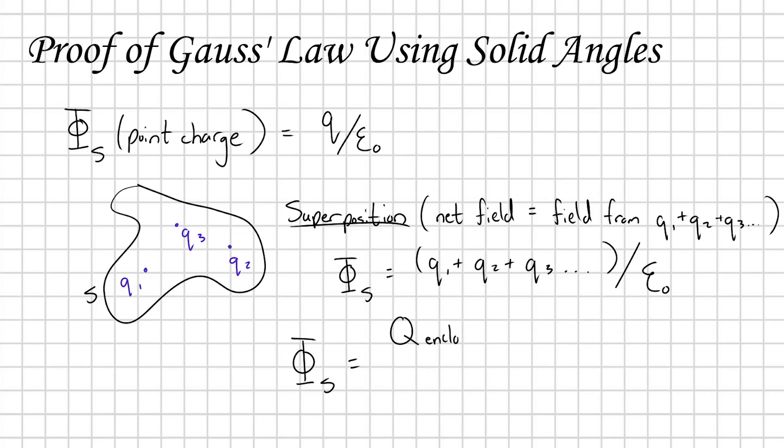And so we come up with this nice version of Gauss's law here, that the electric flux through our surface is going to be equal to Q enclosed over ε₀, where Q enclosed is defined as the total charge inside of the surface S.